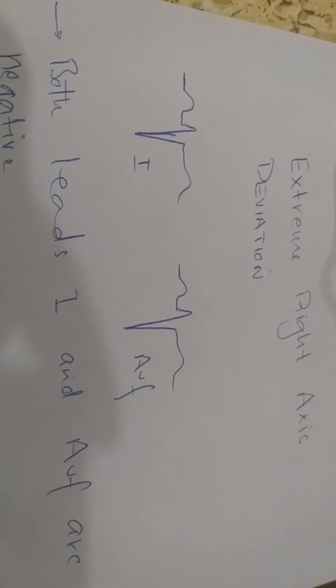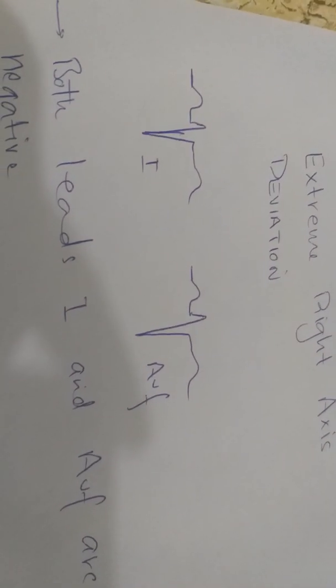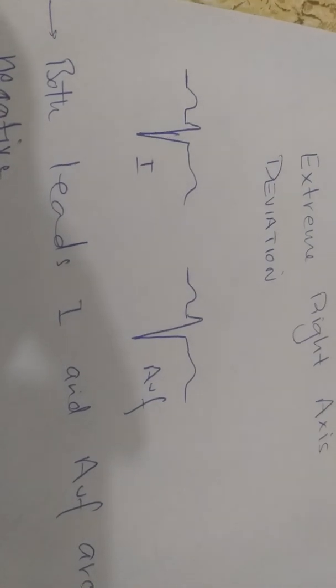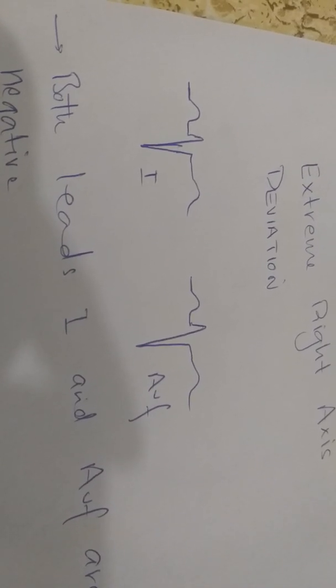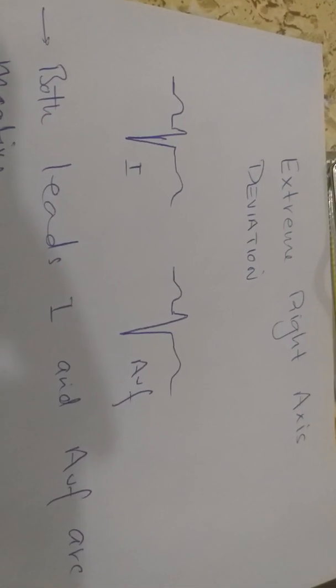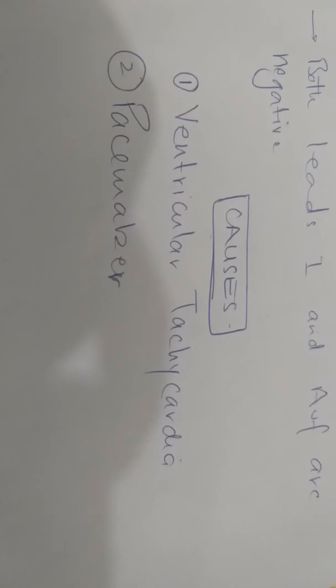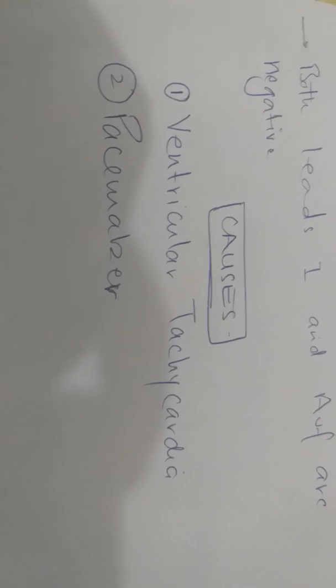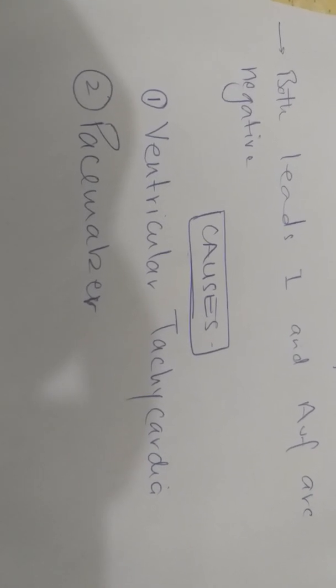Extreme right axis deviation — also called no man's land — is where both Lead 1 and Lead AVF are negative. The heart is so compromised that the electrical activity is not going towards either Lead 1 or AVF. The causes of extreme right axis deviation are ventricular tachycardia and a pacemaker — temporary or permanent — because the ventricle is generating its own electrical activity under the pacemaker's effect.